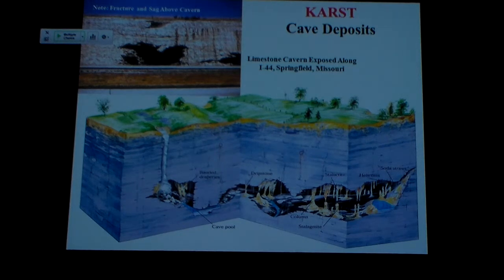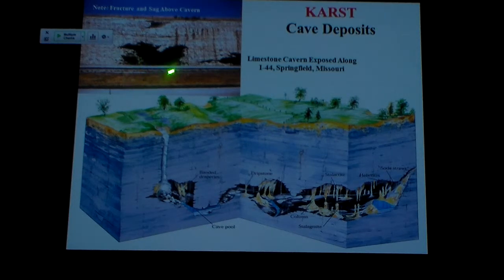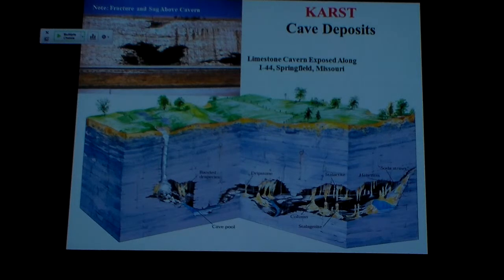Here you can see this I-94 section by Springfield, Missouri, where they've cut down through the limestone and you can see the caverns that have been exposed in the process. Here's a cavern — notice the fractures, and there's a sinkhole on the surface forming up there. So we've got a sinkhole that's forming both as a subterranean cavern and dissolving out from the surface. Will it eventually collapse? Yeah, this will just collapse and will probably spill out under the highway — before it just collapsed as a hole, now we'll probably be digging it out of the interstate.